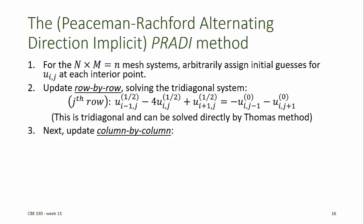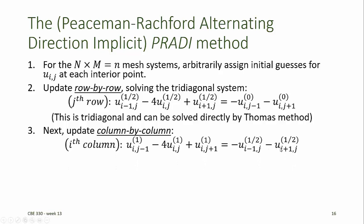Next we update our guesses for u going column by column. In this case we move the i minus 1th column and the i plus 1th column over to the right-hand side of the equal sign, and we retain the ith column on the left-hand side. Now we use the values obtained in the first half iteration for the values of the elements on the right-hand side of these equations, and we calculate values for each of the unknown mesh points — with the superscript 1 indicating the end of the first iteration. This system of equations can also be written in tridiagonal form because each equation has at most only three unknowns on the left-hand side, and can therefore be solved using the Thomas method.